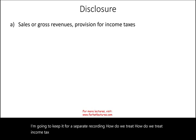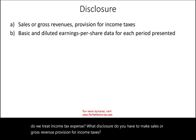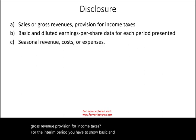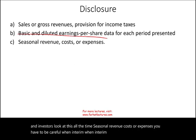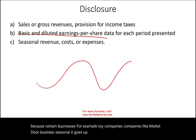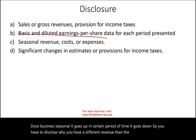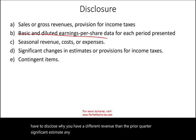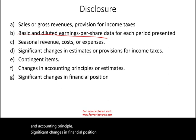Required disclosures include: sales or gross revenue, provision for income taxes, and for the interim period you must show basic and diluted EPS — investors look at this constantly. You must also disclose seasonal revenue, costs, or expenses, since certain businesses like toy companies such as Mattel are seasonal. Additionally, disclose significant estimates, provisions for income taxes, contingent items, changes in accounting principles, and significant changes in financial position — anything relevant or important.